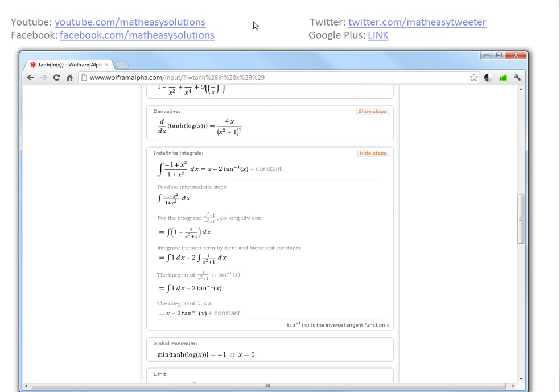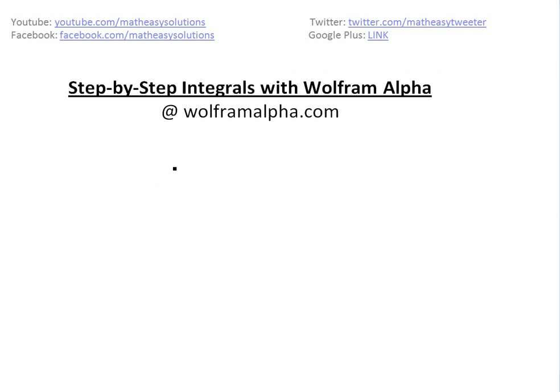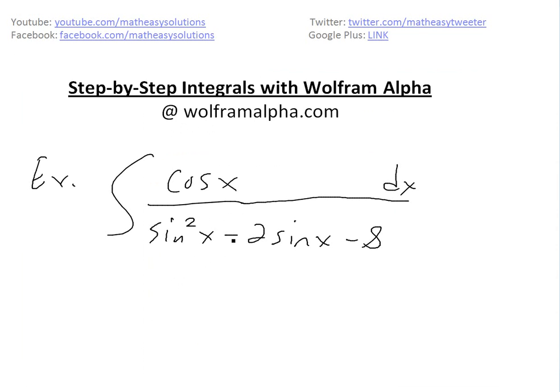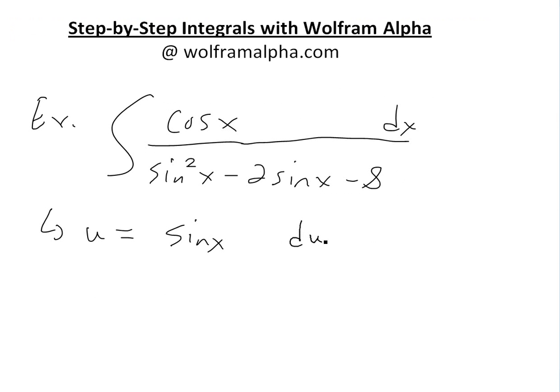Well, I just want to do a quick example, and then we'll see if the steps follow exactly what I would do. Let's say, example, cosine of x over sine squared of x minus 2 sine of x minus 8. I'm picking this example just because the steps in doing this is pretty different from what you're used to. So basically here, what you can do is use substitution. Let u equal sine of x.